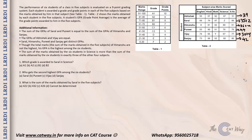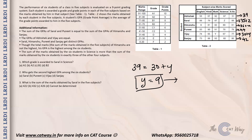Since GPA of Abhishek and Vijay are equal, their total grade points must be equal. Abhishek's sum is 39 and Vijay's is 30 plus Y, so Y equals 9. That means Vijay scored between 81 to 90 marks in that subject.